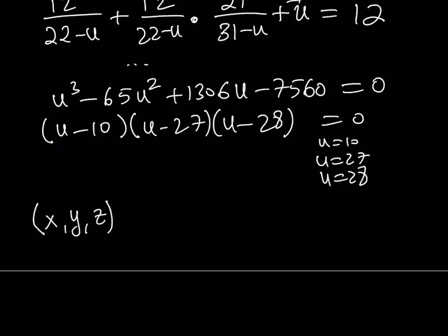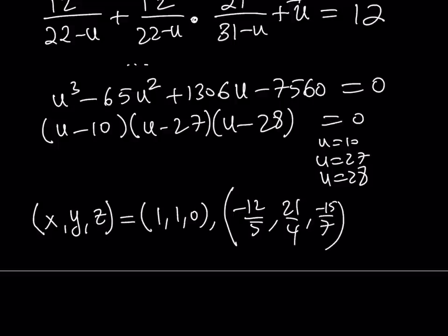So, from here, we can basically write the solutions as ordered triples. Let's go ahead and do that. And, talk about the second method. So, x, y, z is going to be either 1, 1, 0. Or, it's going to be negative 12 over 5, comma, 21 over 4, comma, negative 15 over 7. Or, it's going to be negative 2, 7, comma, negative 2. So, we got three solutions for the ordered triple x, y, and z.